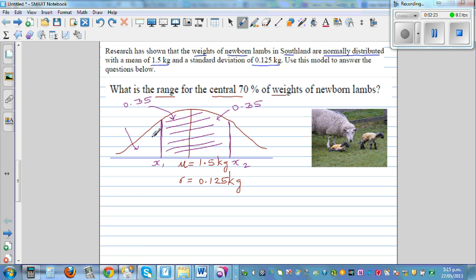So you can say that the probability that a lamb is born with weight less than x1 is 0.15, and this would be 0.15 on the other side. So the question is what is the range? That is, what is x1 and what is x2? And that is for the middle or central 70%. Now how do you do this on a calculator?